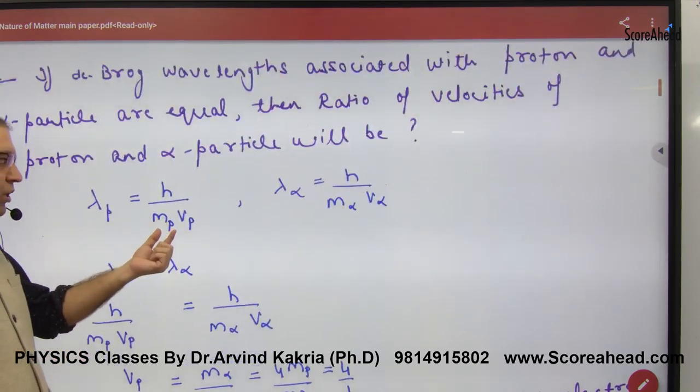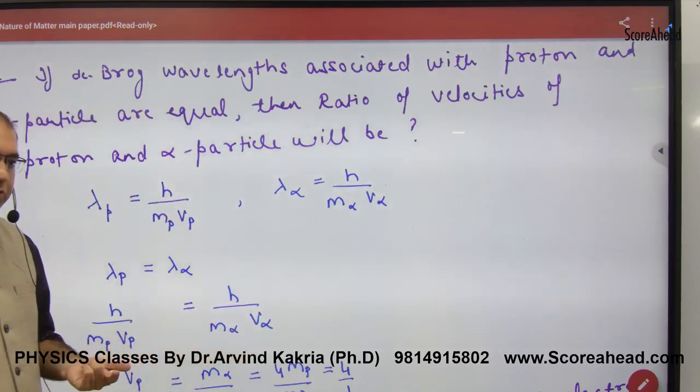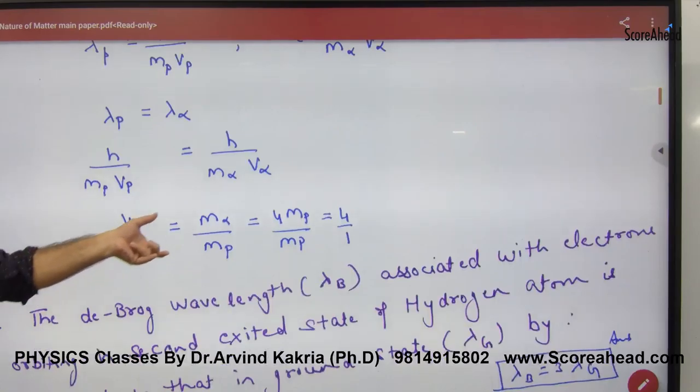Lambda proton is h upon m_p v_p and lambda alpha is h upon m_alpha v_alpha. p is mass into velocity. Lambda is equal for both. Equate them and the ratio of velocity will come.